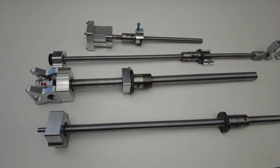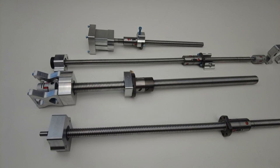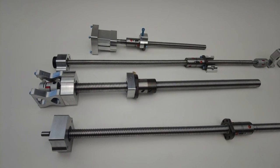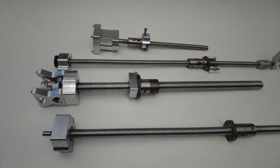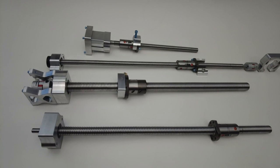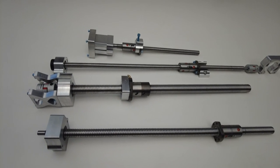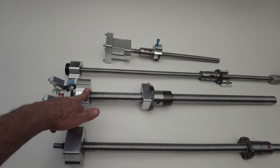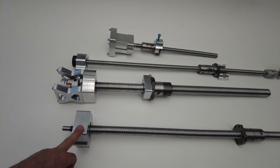Hi guys, we have the new Precision Matthews PM-833TV CNC kit ready now. We have two different Z screws: the 32-millimeter ball screw and the 25-millimeter ball screw.